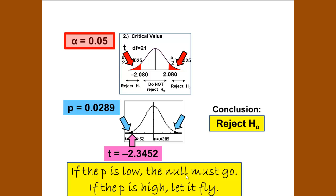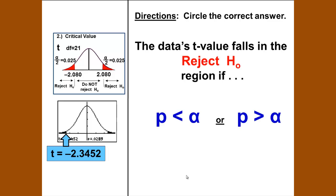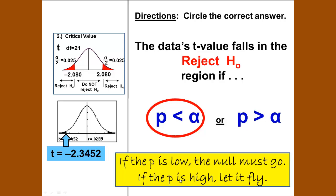If the p is low, the null must go. If the p is high, we let it fly. Circle the correct answer: The data's t-value falls in the reject H0 region if p is less than alpha. If the p is low, the null must go. If the p is high, we let it fly.